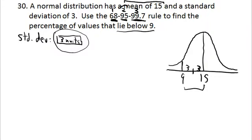That means you'll be using the 95 from the 68-95-99.7 rule. Remember, this rule tells you the percentage in both directions from the mean. Even though they're only asking about below 9, you finish this out by going to the other side of the mean, counting by 3s twice: 15 plus 3 is 18, plus 3 is 21. You always draw a symmetrical picture.